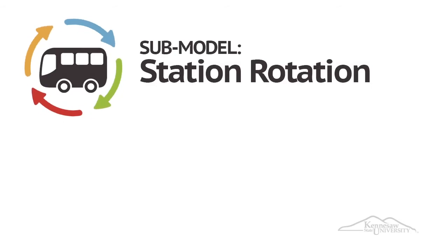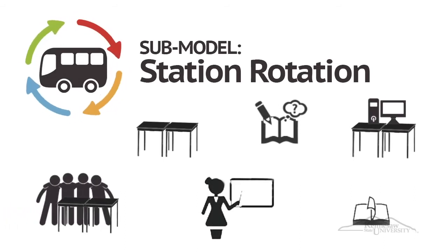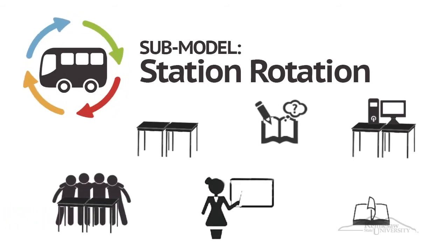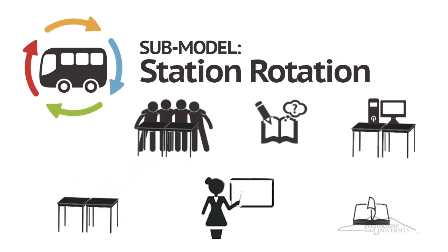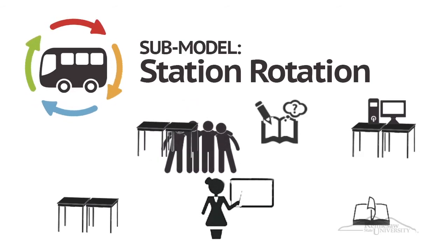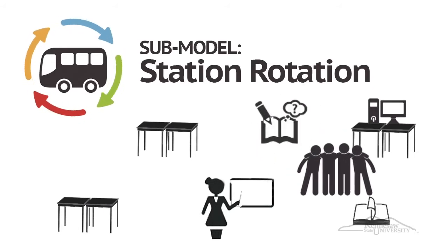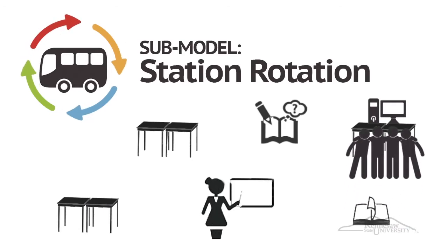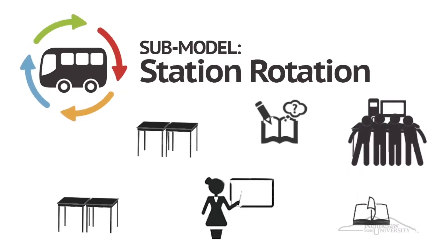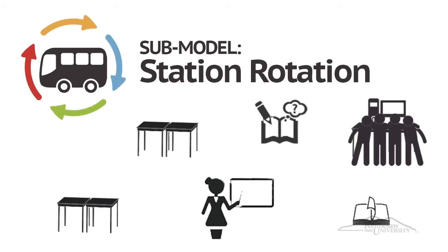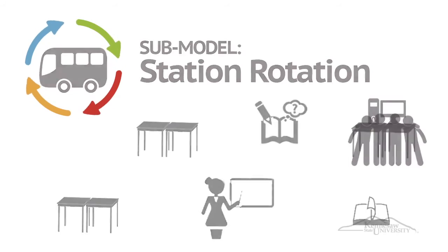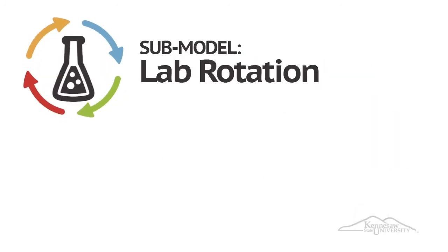The Station Rotation resembles elementary classroom experiences where students rotate among classroom-based activities and modalities, moving from station to station—sometimes called centers. Small student groups may move between stations that include small group instruction with a teacher, individual pencil and paper work, a reading corner or listening station, and always at least one station for online learning. This model works great with a small group of 2–5 student desktop computers, and many elementary teachers may already be implementing it.